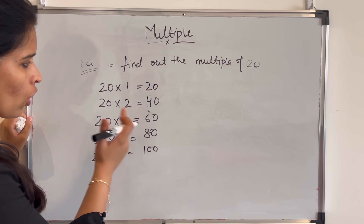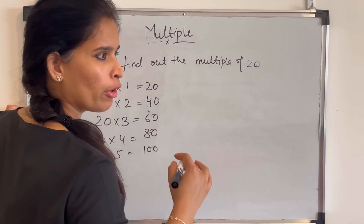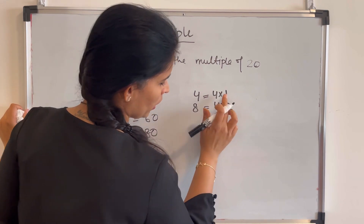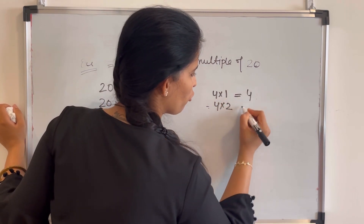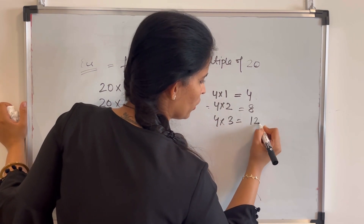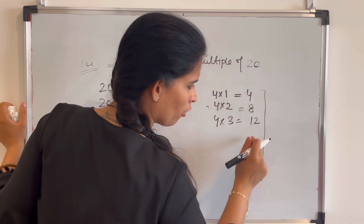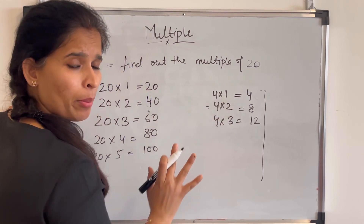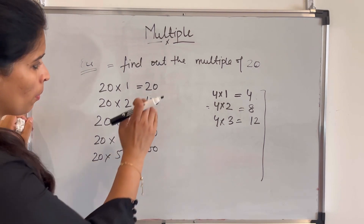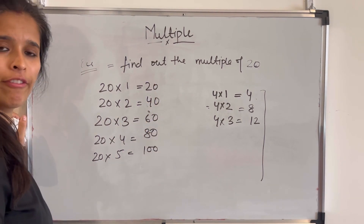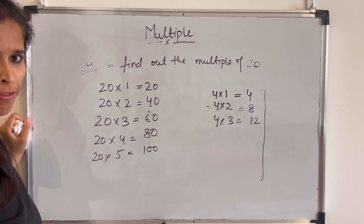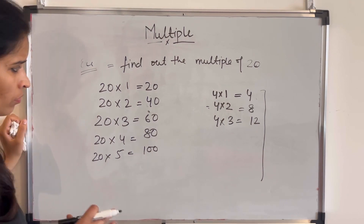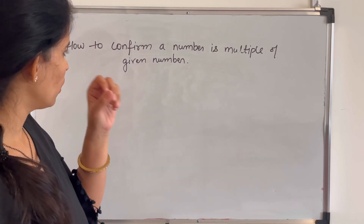The third property is: a multiple is either equal to the given number or greater than it — it cannot be less. For example, the multiples of 4 start at 4 (which is 4×1), and every subsequent multiple is greater. The fourth property is: multiples are uncountable — you can find infinitely many multiples of any number, like thousands or ten thousands, so they cannot be counted.